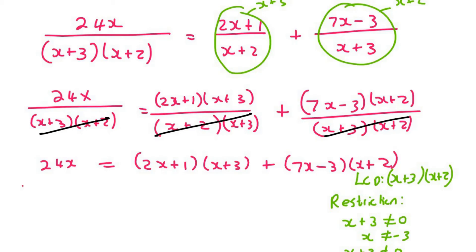Now we can multiply out, so we'll end up with 24x equals 2x² plus 6x plus x plus 3, plus 7x² plus 14x minus 3x minus 6.